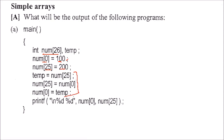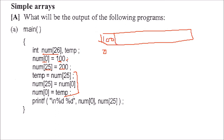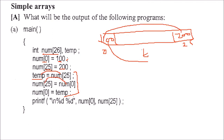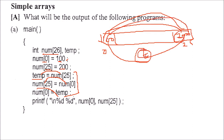This code is actually swapping the numbers. The 0th position has 100 and the 25th position has 200. A temporary variable is used: 100 is given to temp, then 200 is transferred to position 0, and finally temp is transferred to position 25. So when you see the numbers it will be 200 and 100, because they have swapped places.